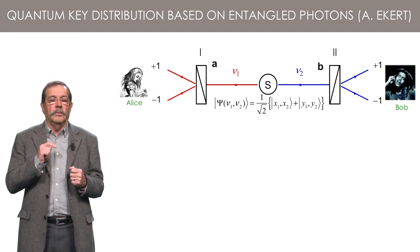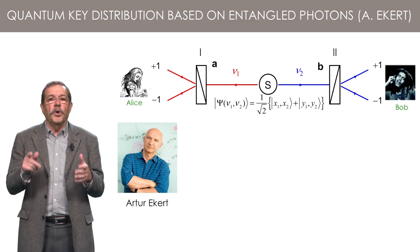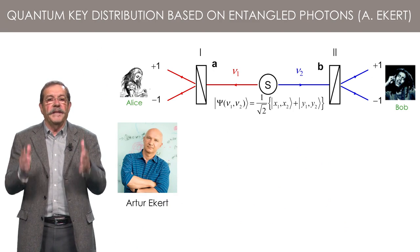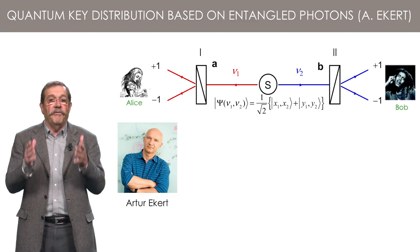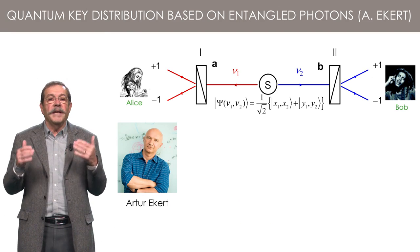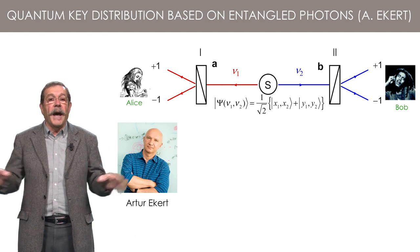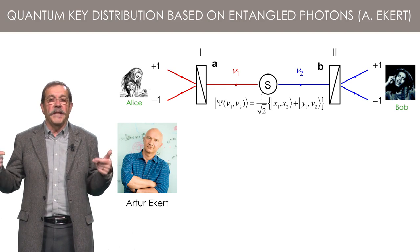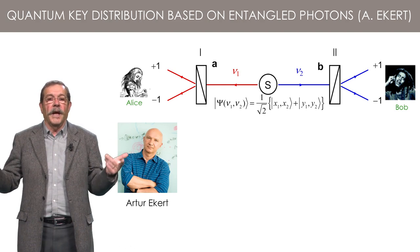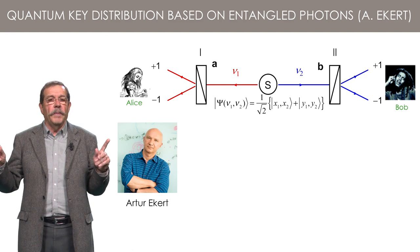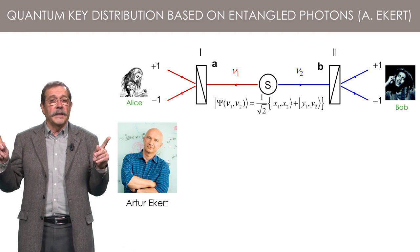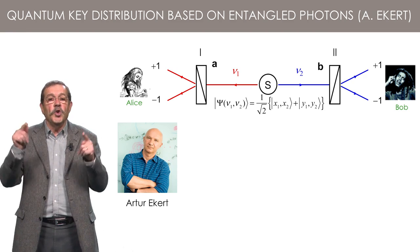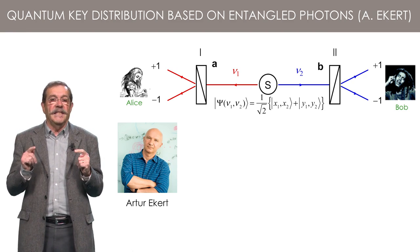They must receive two new identical series of 0 and 1 without the eavesdropper Eve being able to get his own copy of the key. In 1992, Arthur Eckert proposed a method based on polarization entangled pairs of photons to simultaneously generate, at two distant places, two identical sequences of 0s and 1s.